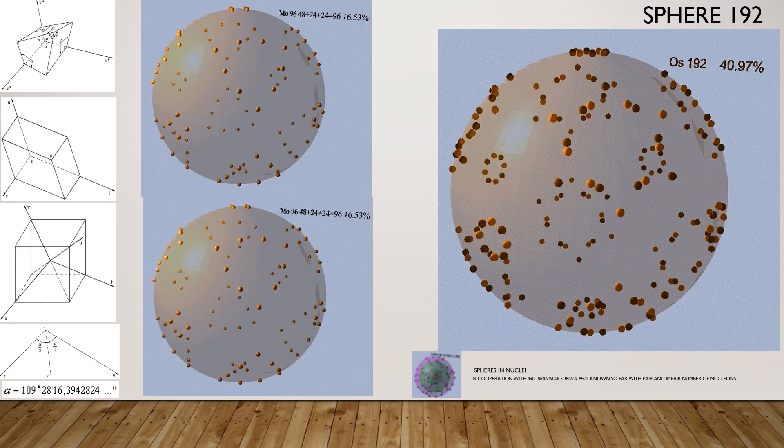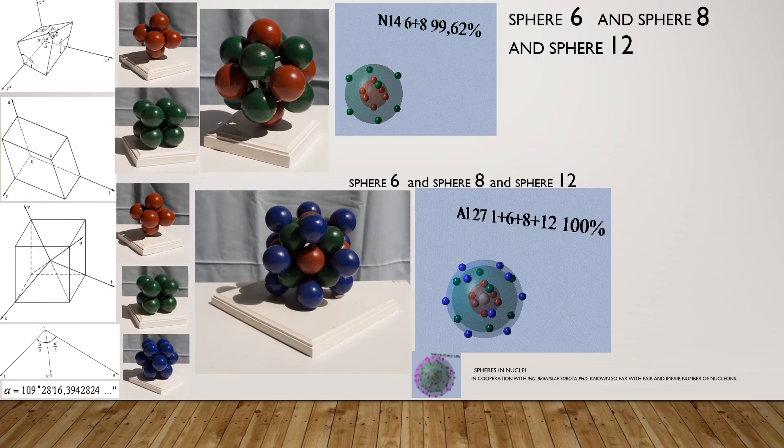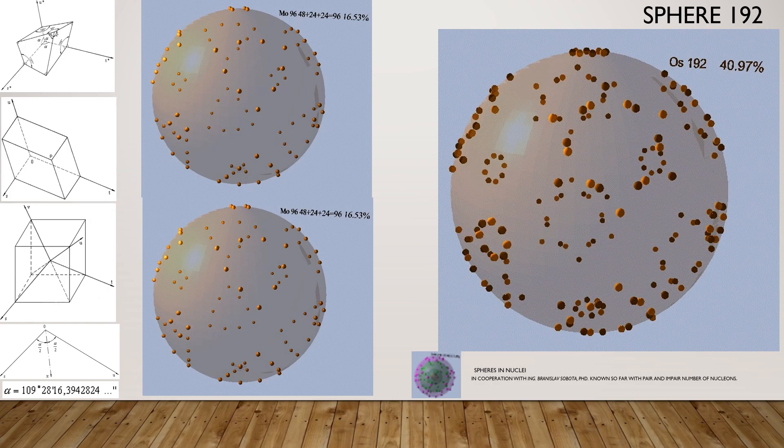Nucleus of Osmium 192. Inserted 6 plus 8 and 6 plus 8 plus 12. Mutually inserted 48 alpha particles — nucleus of Osmium 192.